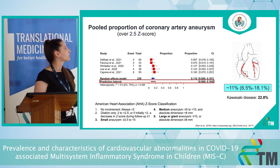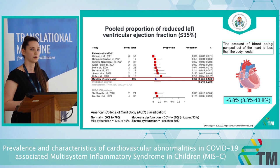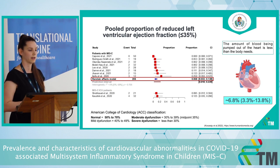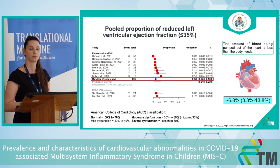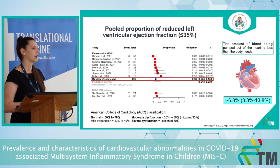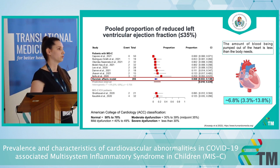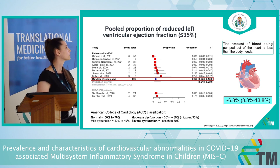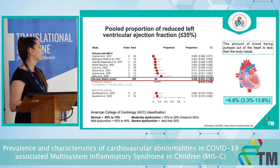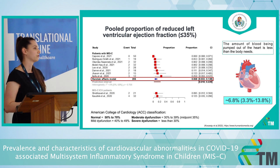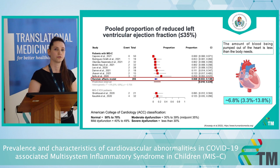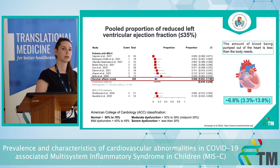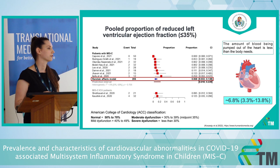Our second outcome is connected to left ventricular dysfunction. We use the term ejection fraction, which represents the amount of blood being pumped out from the left ventricle. We set the cut-off value to 35%, covering moderate and severe dysfunction. After analyzing more than 200 patients' data, we obtained a pooled proportion rate of 6.8%. Therefore, around 7% of children hospitalized with MIS-C will experience severe heart failure.